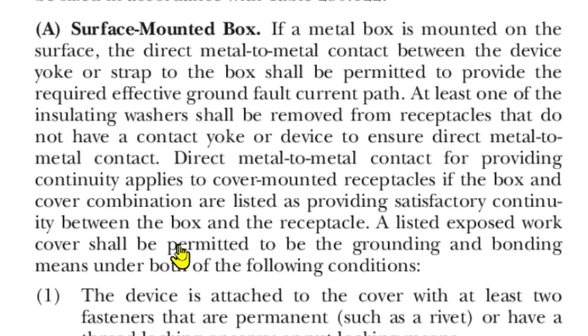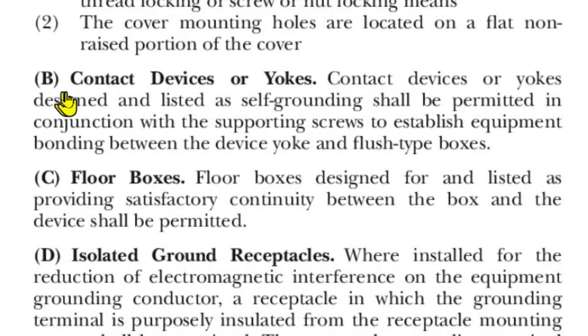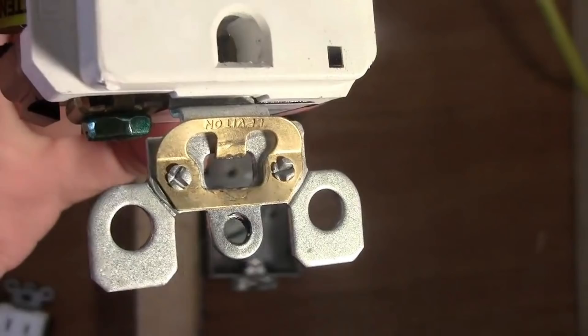And here we have B - contact devices or yokes designed and listed as self-grounding shall be permitted in conjunction with the supporting screws to establish equipment bonding between the device yoke and flush type boxes. So the devices must be designed and listed as self-grounding, and the ones I showed you with the self-grounding clips are.